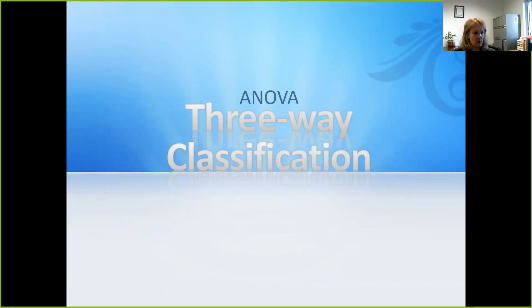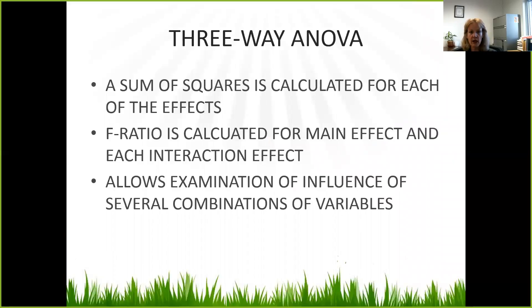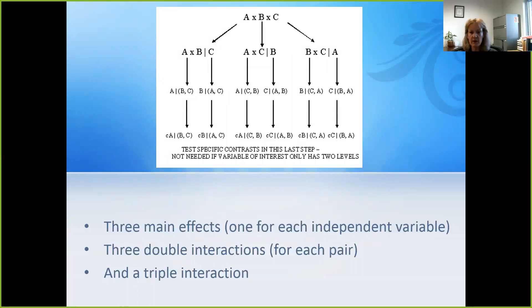One more example is the three-way ANOVA, or three-way classification. In three-way ANOVA, you have a main effect of A, main effect of B, main effect of C, and your interactions — it's exactly the same idea, only there are three variables. The sum of squares is calculated for each of the effects, the F-ratio is calculated for the main effect and each of the interaction effects, and it allows examination of the influence of several combinations of variables. You have three main effects — one for each independent variable — three double interactions for each pair, and a triple interaction.